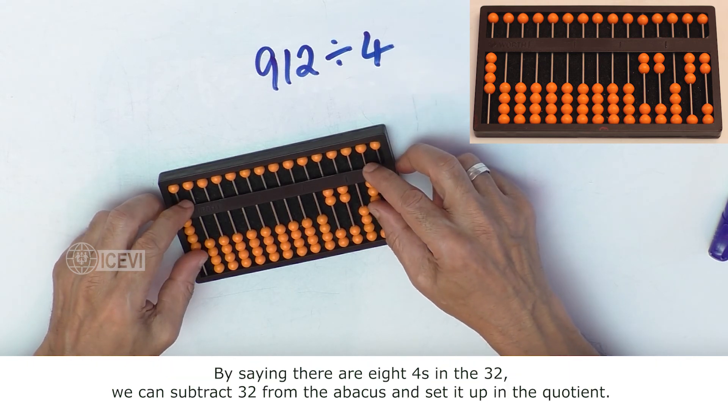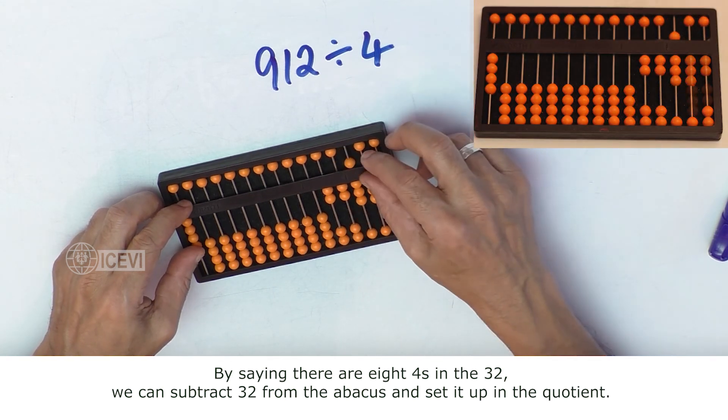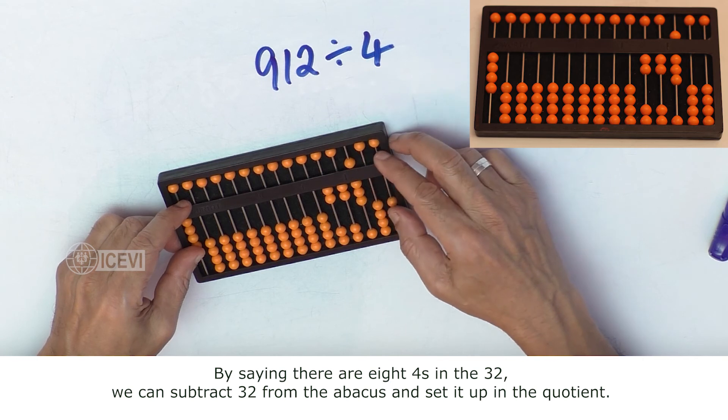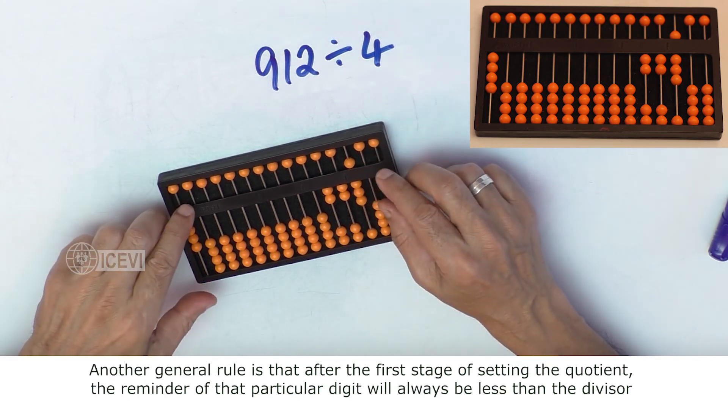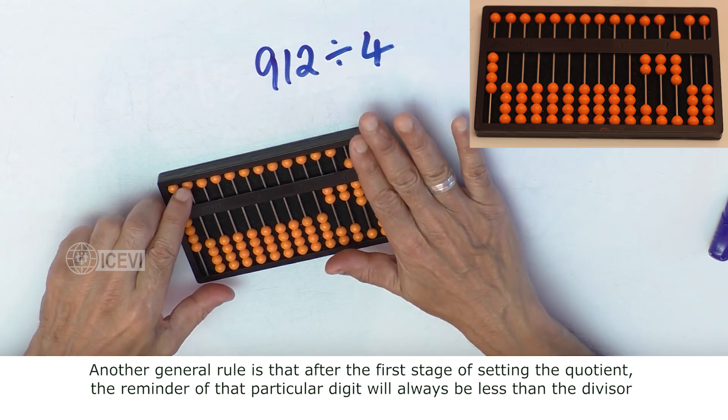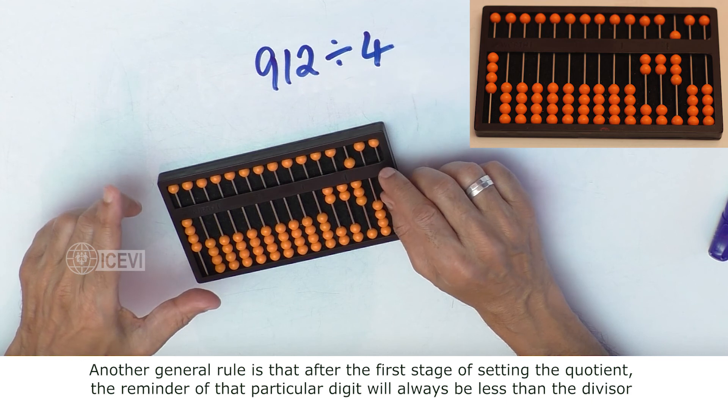So by saying there are 8 fours in 32, we can set the 8 there and subtract 32 from the abacus. Another general rule is that after the first stage of setting the quotient, the remainder of that particular digit will always be less than the divisor.